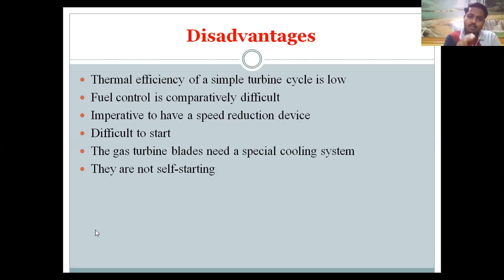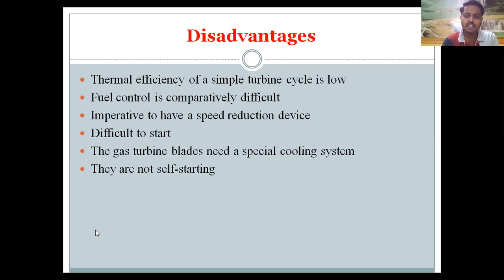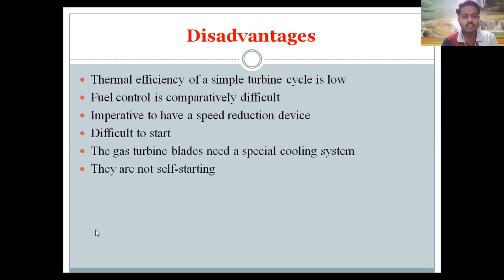For a simple turbine cycle, thermal efficiency is around 15 to 20 percent. However, when we incorporate intercoolers, reheating, and regenerating type equipment to modify the gas turbine power plant, the efficiency can exceed 45 percent. Also, a wide operating range of fuel control is comparatively difficult in a gas turbine power plant.